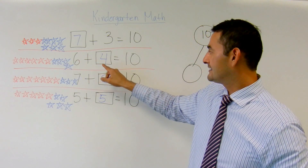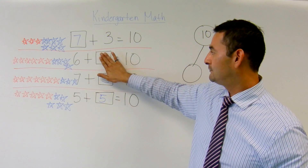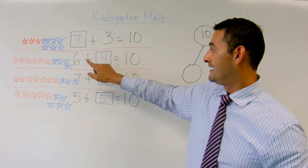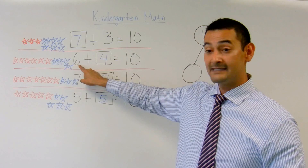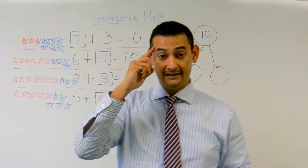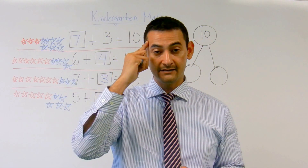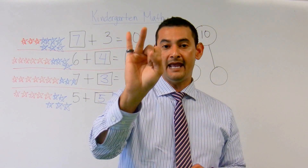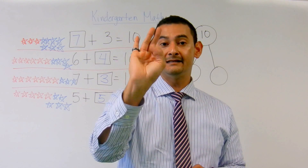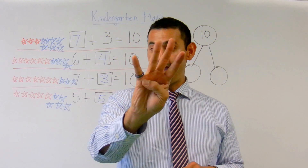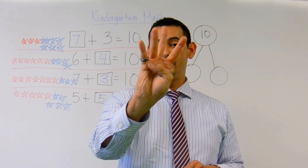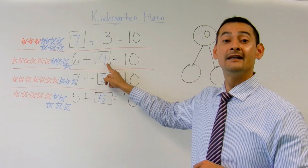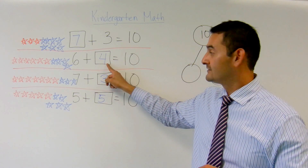Now let's take a look at this one. 6 plus something equals 10. I'm going to put the 6 in my head and I'm going to count to 10. 6, count up: 7, 8, 9, 10. How many do I have? 1, 2, 3, 4. Is that 4? Yes, it is.